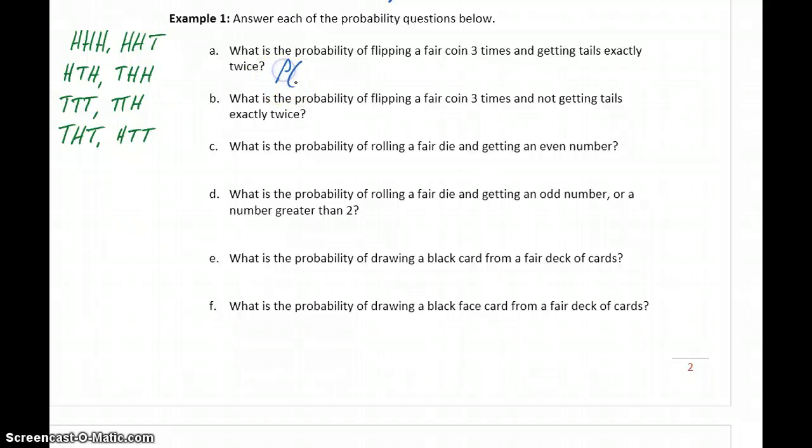And what we want is the probability of tails exactly twice. So we just need to look at the sample space and identify any possibilities here where we would get tails exactly twice. And it turns out to be just these three different cases. So the probability of getting tails exactly twice is three out of the eight possible different combinations.